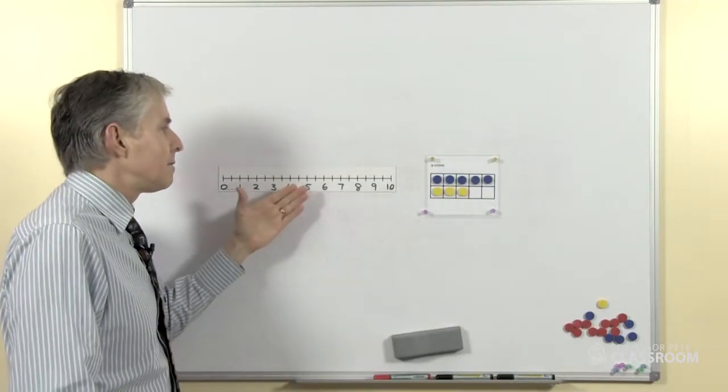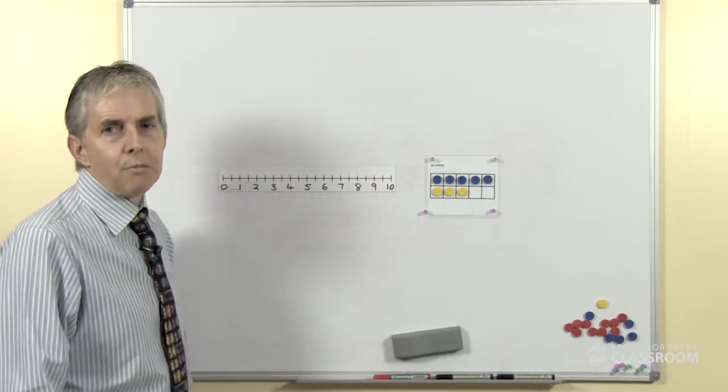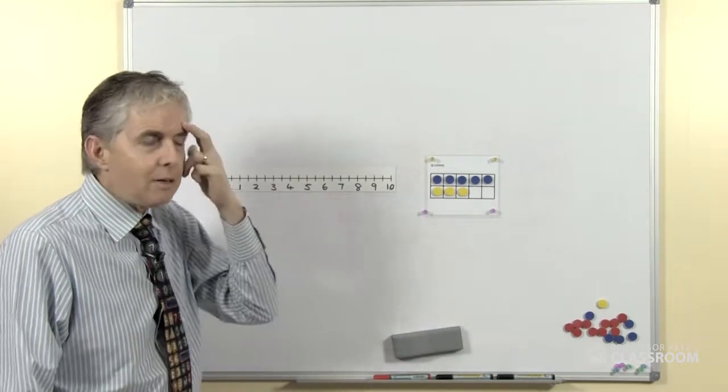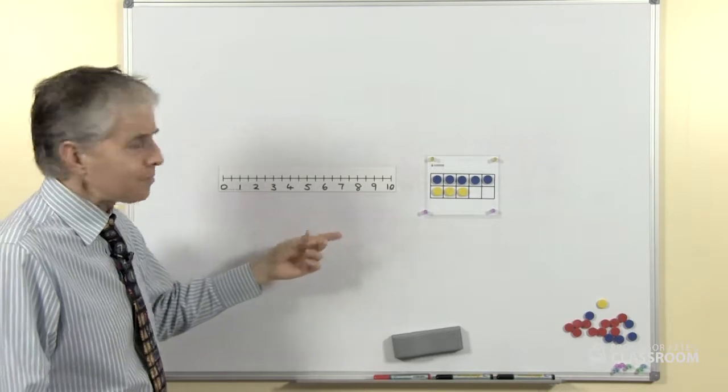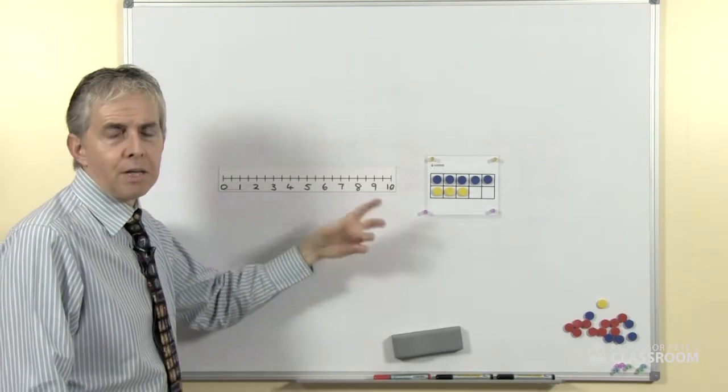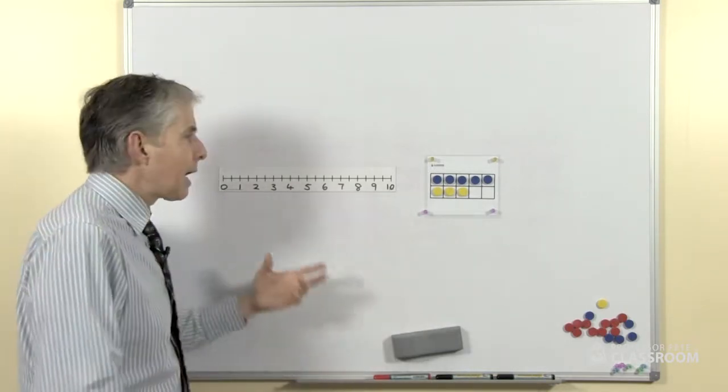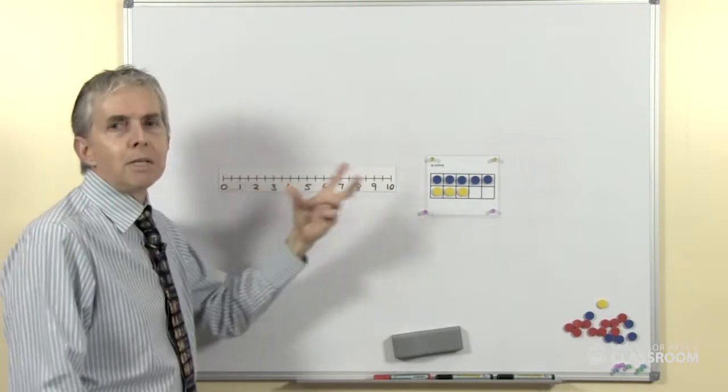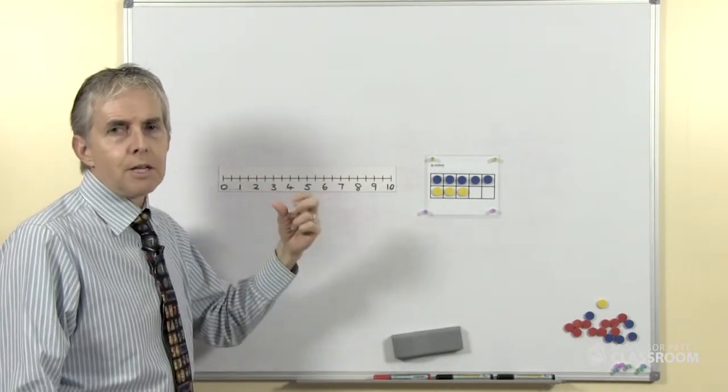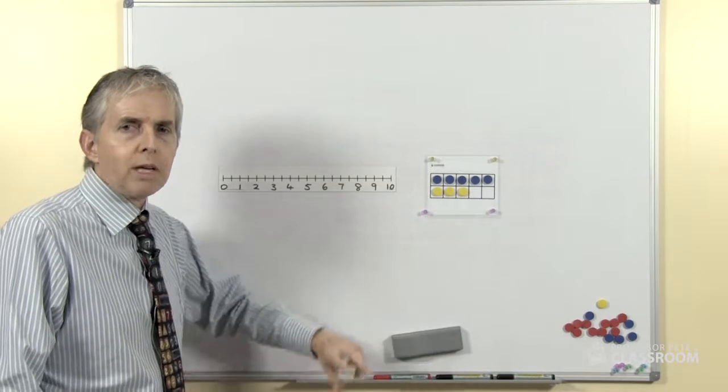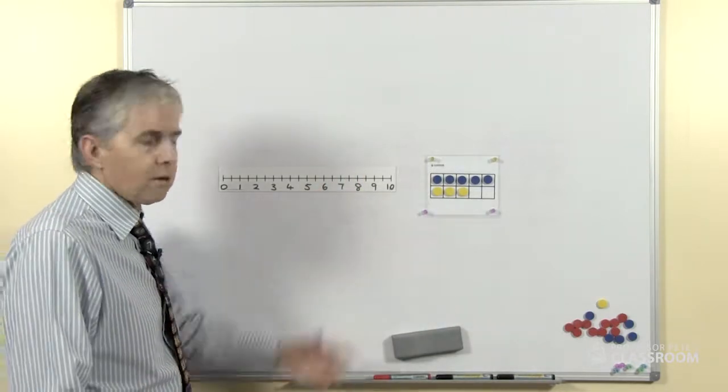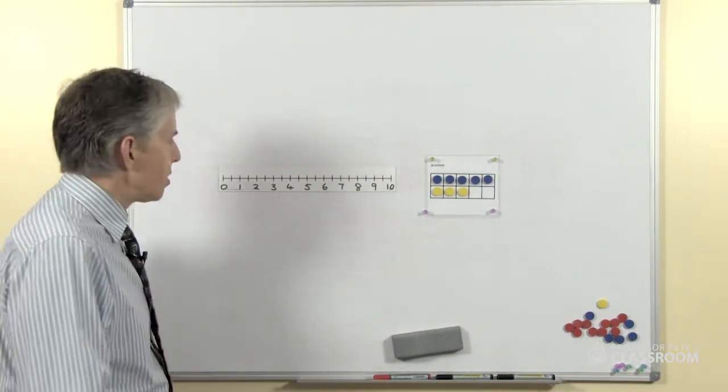So whereas if we were doing another number fact like 4 plus 5, we could do that on a number line but it's slow and cumbersome. When the numbers get larger, the number line's not all that useful. We can use it, but 10 frames are going to be more useful for a lot of those examples.